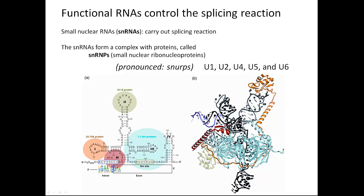The factors that do the splicing reaction are made up of a complex of RNAs and proteins. The RNAs are called snRNAs, or small nuclear RNAs, and they complex together with a bunch of proteins to form complexes called small nuclear ribonucleoproteins, abbreviated snRNPs — and oddly enough, this is pronounced 'snurps' by people in the field.